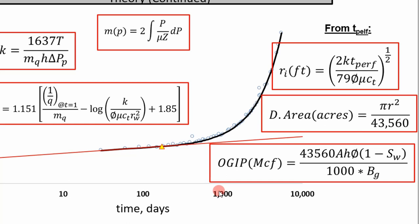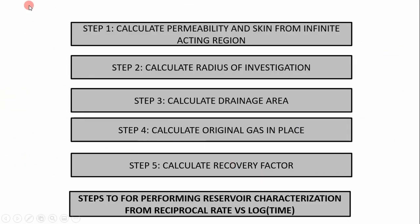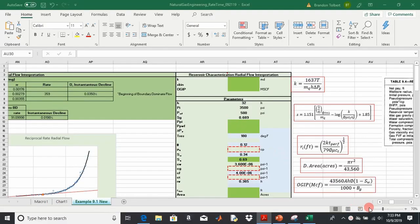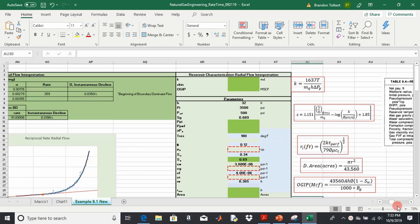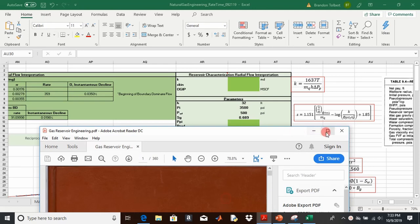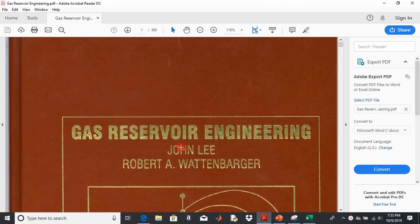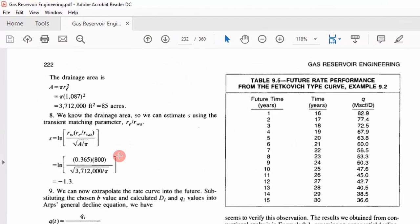You can do all of this from production decline data — you don't have to shut in the well. These are the steps we'll apply in our Excel analysis. We're using the same production data from the previous video, and reservoir parameters from the textbook 'Gas Reservoir Engineering' by Lee and Wattenbarger. If we go to page 232 we'll see Example 9.2, which estimates permeability and skin using type curves.